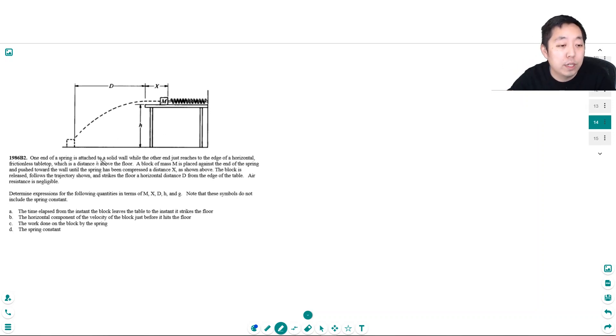One end of the spring is attached to a solid wall while the other end reaches the edge of a horizontal frictionless table which is a distance h above the floor. A block of mass m is placed against the end of the spring and pushed toward the wall until the spring is compressed a distance x as shown above. The block is released following the trajectory shown and strikes the floor a horizontal distance from the edge of the table. Air resistance is negligible. Determine the expressions for the following quantities in terms of these letters. Note that these symbols do not include the spring constant.